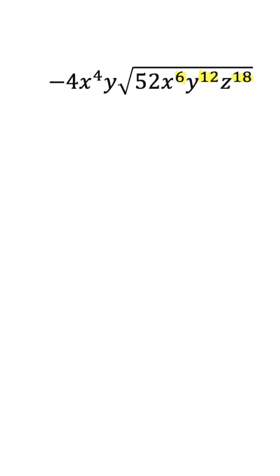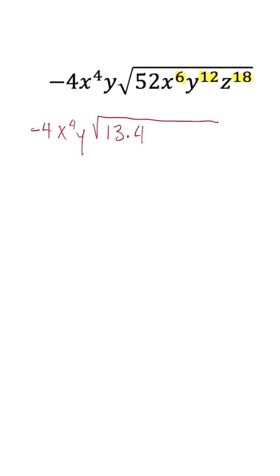Now, when we think about breaking this down, what's on the outside is going to stay the same. Under the radical, we could break our coefficient down as 13 times 4. And all our exponents and variables are going to stay the same.